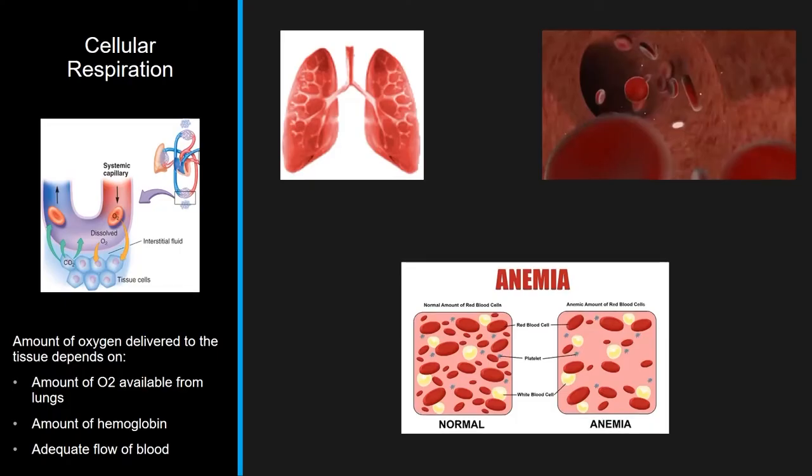Nothing replaces blood except blood. We haven't come up with a good replacement for blood. When we talk about cellular respiration — the ability to use oxygen where it needs to be used — you've got to have the little boxcars of hemoglobin molecules to move it from the lung to the muscle. If you don't have the boxcars, or the oxygen doesn't get off the boxcars, you can't have cellular respiration. The amount of oxygen delivered to tissue depends on oxygen available from the lungs, the amount of functional hemoglobin, and adequate blood flow to the tissues.